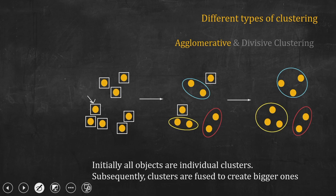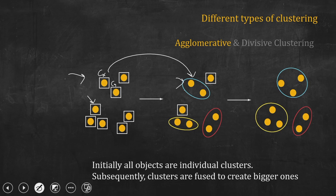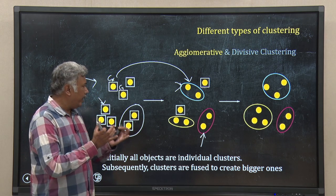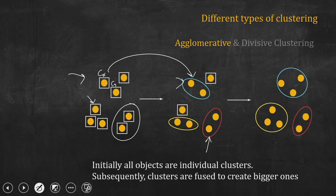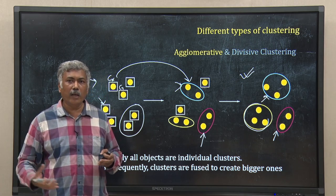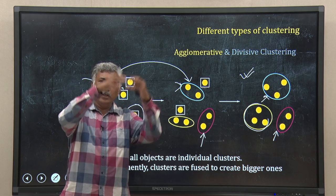Subsequently, I find out which clusters in the dataset are close to each other. Suppose clusters Cx and Cy are close to each other — I join those two clusters to create a new bigger cluster. In this way, we keep on fusing clusters which are close to each other and eventually I get three clusters. So in agglomerative clustering, you start with every object as its own cluster and keep joining and fusing them to create bigger clusters.